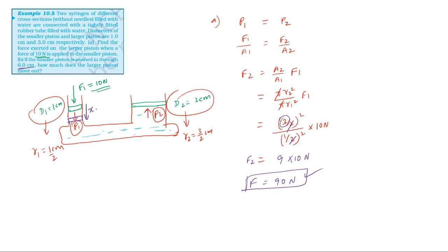For the second part, the displacement of the smaller piston is 6 centimeters. Let x2 be the distance moved by the larger piston. Since water is an incompressible liquid, the volume displaced by the first piston must equal the volume displaced in the larger piston.